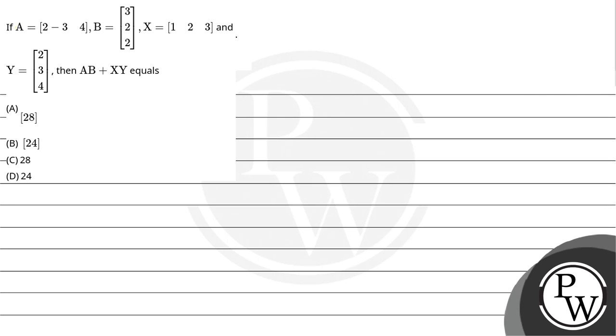Now let's solve the question: if A is equal to [2, -3, 4], B is equal to [3, 2, 2], X is equal to [1, 2, 3], and Y is equal to [2, 3, 4], then AB plus XY equals what?